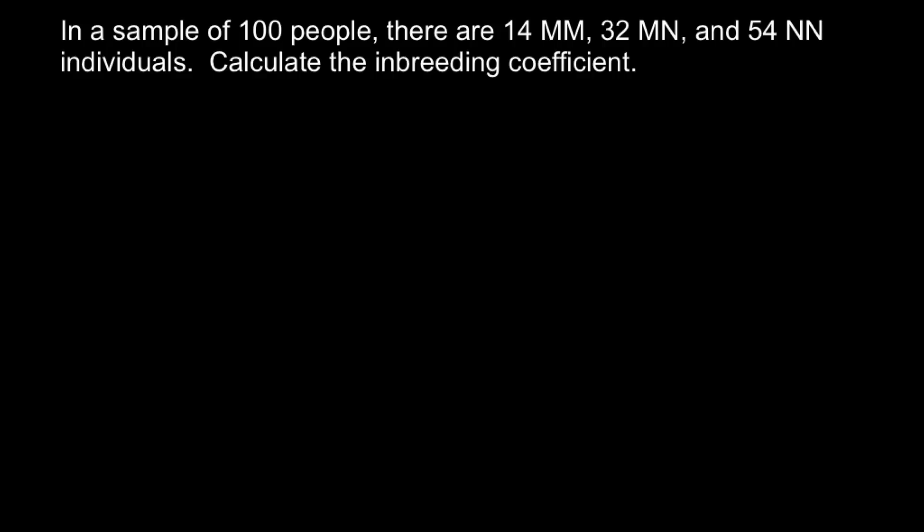If you know how to do it, you may stop the video here and try to solve this problem on your own. When you are ready, you can run the video again and compare your answer with my answer and explanation. So here we have three genotypes, and all three genotypes represent different blood groups in the MN blood group system.